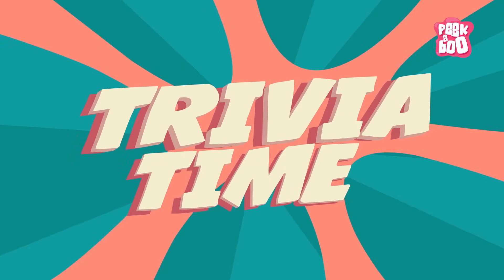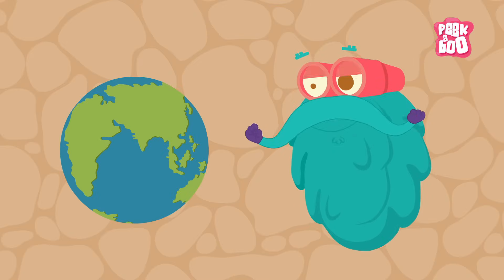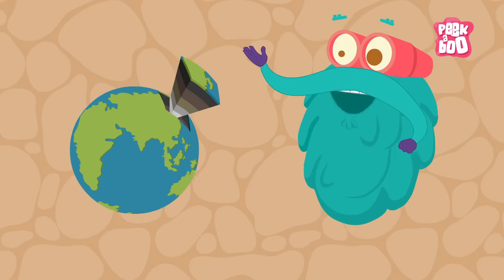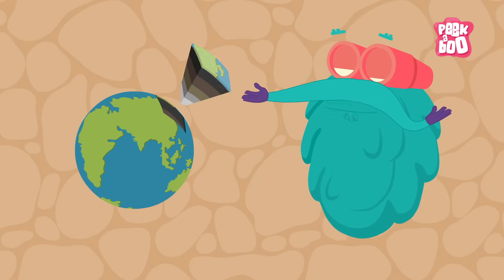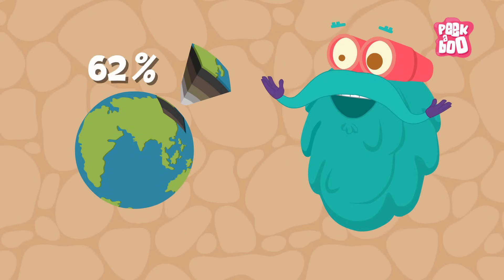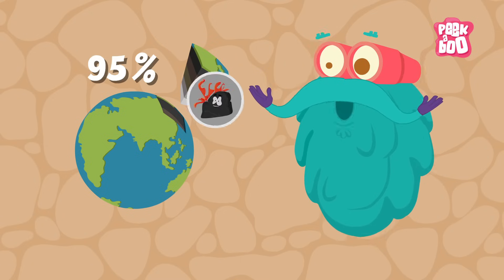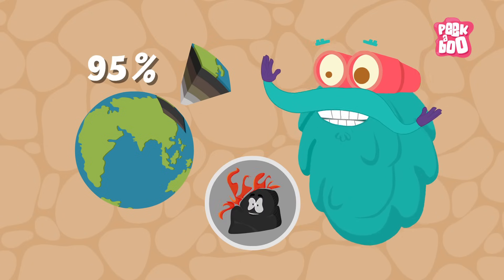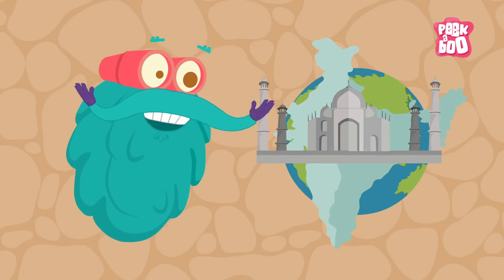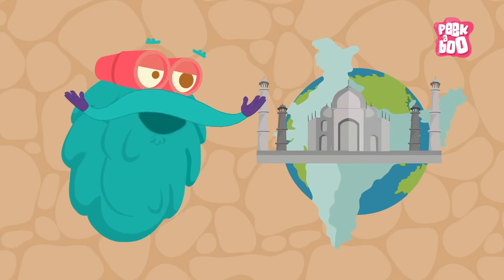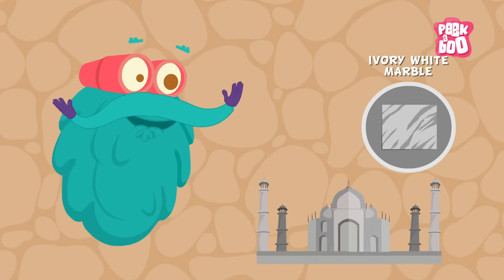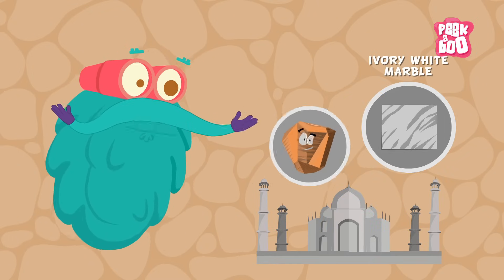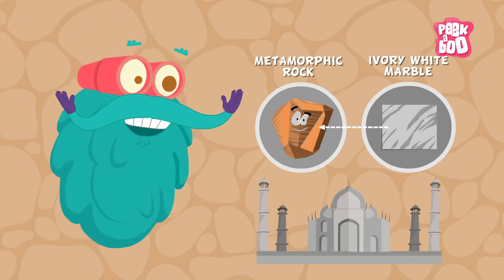Trivia Time! The upper segment of the earth's crust is made up of about 95% of igneous rocks. The Taj Mahal in India is completely made of different types of marble, a metamorphic rock.